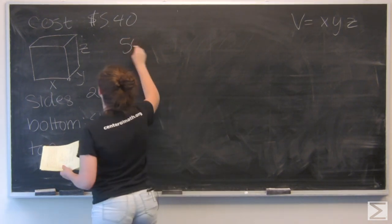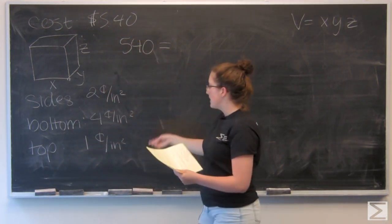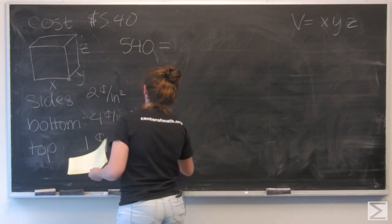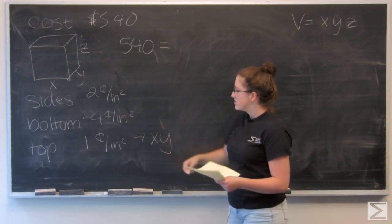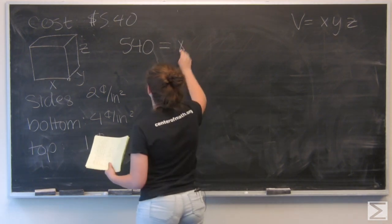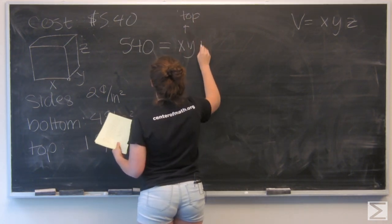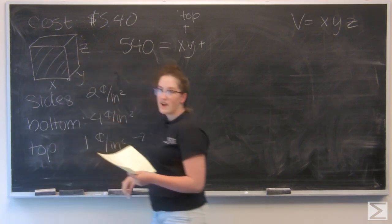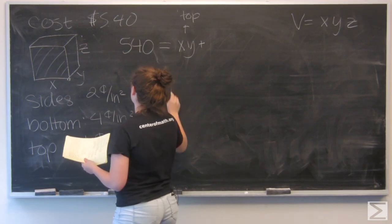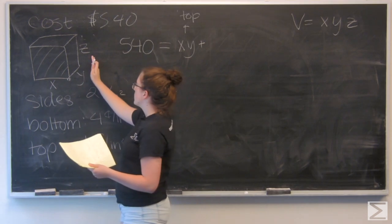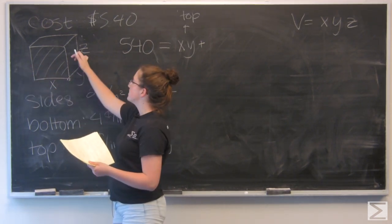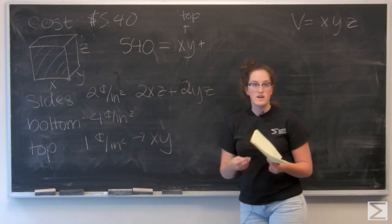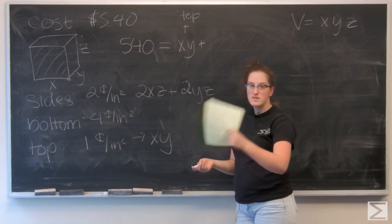The top is the easiest — the area of the top is going to be x times y square inches, so the top is going to cost 1·xy cents. Now for the sides: I have four sides, two different shapes. The front and back faces have dimensions x by z, giving area xz each, and the left and right faces have dimensions y by z, giving area yz each. So I have two of each, contributing 2xz and 2yz to the total side area.